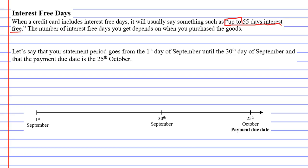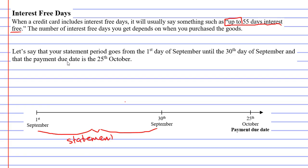To explain how this works, here's a little scenario. Let's say that your statement period goes from the 1st of September to the 30th of September — shown on the dateline below. This is our statement period. It also says that the payment due date is the 25th of October, which is marked here as well.